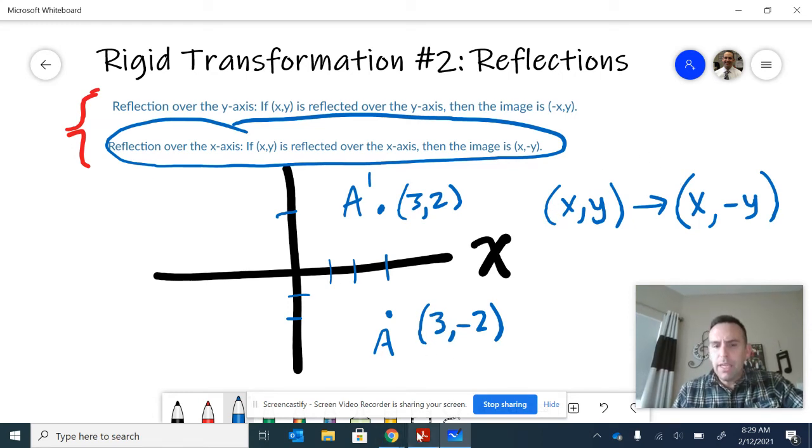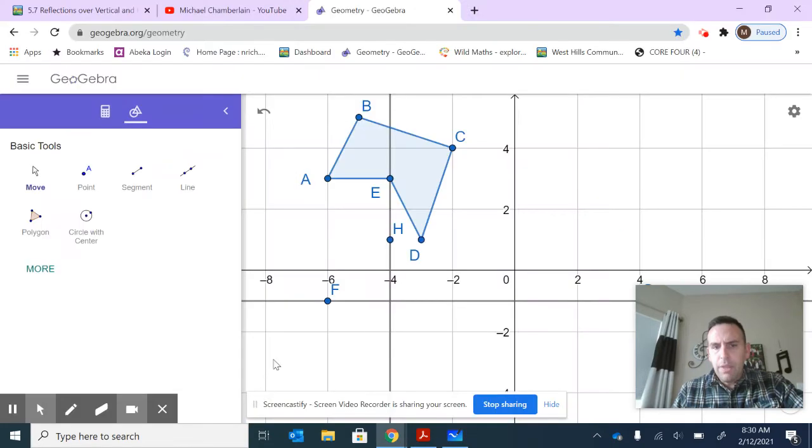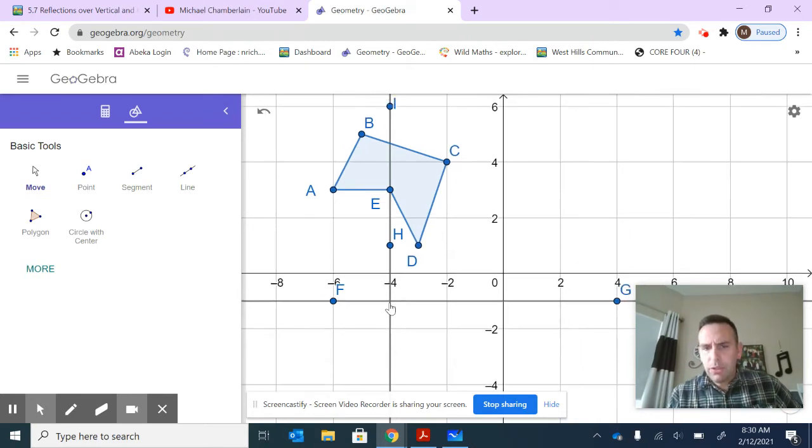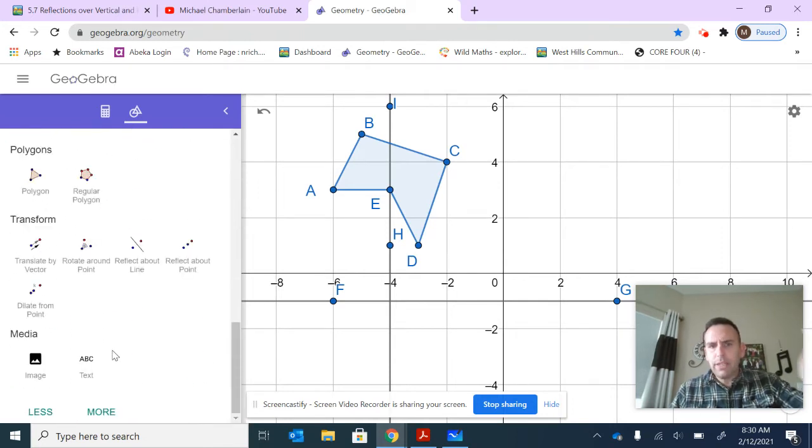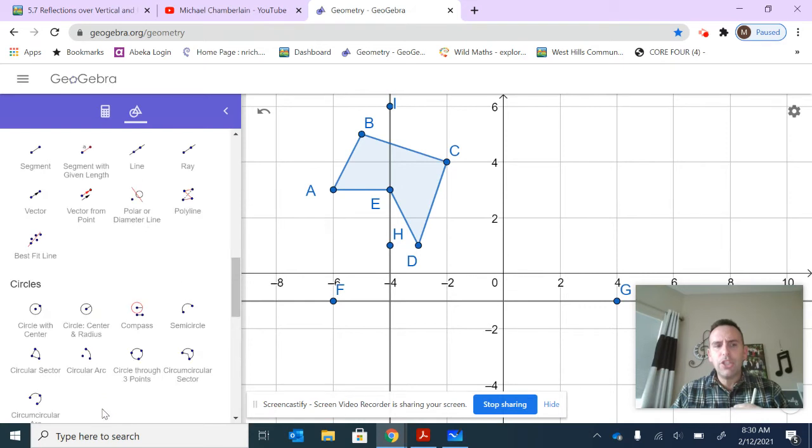Let's take a look at when we reflect across any vertical or horizontal line. Here on GeoGebra, I have this figure in the second quadrant. I want to look at reflecting it across vertical and horizontal lines. I have drawn in a line there towards the bottom, line FG, and I'm going to reflect this figure across it and see how it changes the features of the coordinates.